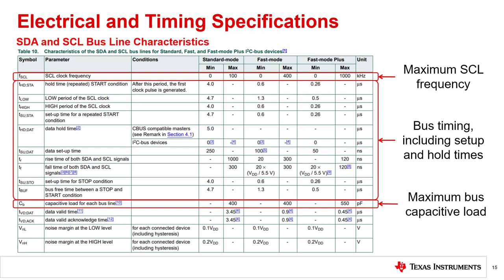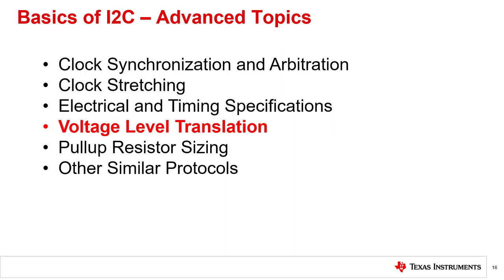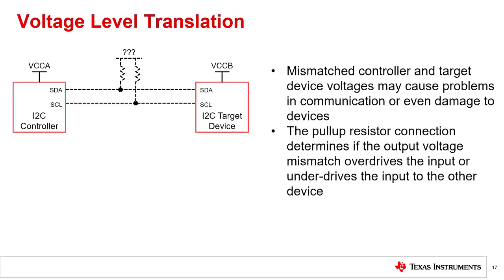One last key parameter shows the maximum capacitive load allowed on the I2C bus lines. With the high signals based on pull-up resistances, the load capacitance may determine the speed at which the I2C bus communicates. Later in this presentation, we'll show how this bus capacitance can be used to determine a range for the I2C pull-up resistances. In whatever I2C devices you use, these SCL and SDA bus line characteristics can be found in their respective datasheets.